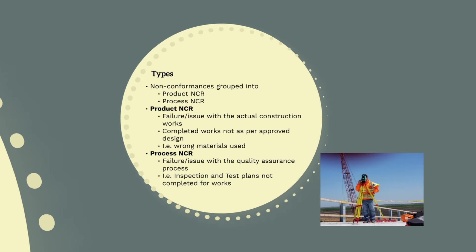Let's now discuss the different types of NCRs. Non-conformances are grouped into two main categories: product NCRs and process NCRs. A product NCR is any failure or issue with the actual delivered construction works — i.e. the product delivered to the client — where the works completed do not meet the required quality standards specified in the design or project specifications. For example, if we are building a concrete slab and use the wrong type of steel reinforcement, this would be a product NCR.